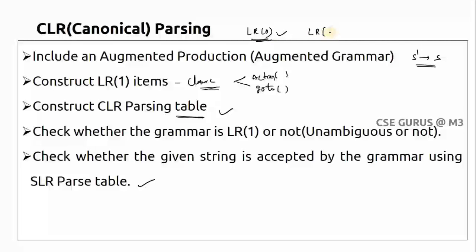Now we require at least one lookahead. In LR parsers, L means left-to-right scanning, R means rightmost derivation in reverse, and k is the number of lookaheads. In SLR we didn't use lookaheads directly — we used the follow function instead. Here in CLR we take the lookahead directly, so we don't need the follow function.